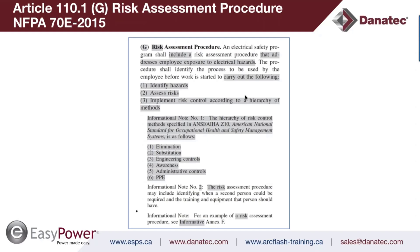The procedure shall identify the process to be used by the employee before work has started: identify if they are exposed to arc flash and shock hazards, assess risks related to the work task, and implement risk control according to the hierarchy of methods. The hierarchy of methods was an informational note in the 2015 edition quoting ANSI Z10. In the 2018 edition, that informational note moves into a sub-article — making it mandatory to consider all hierarchy of controls from top down, not bottom up.